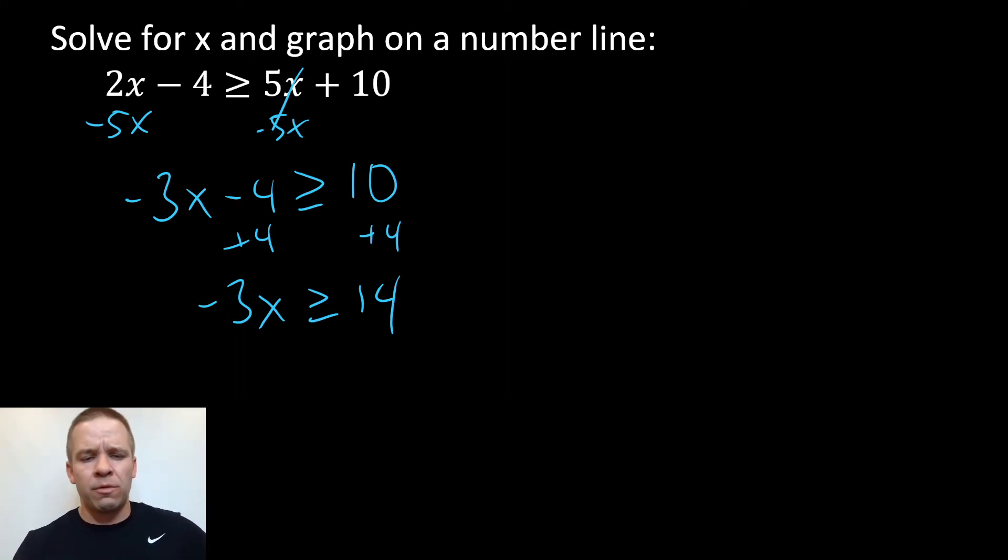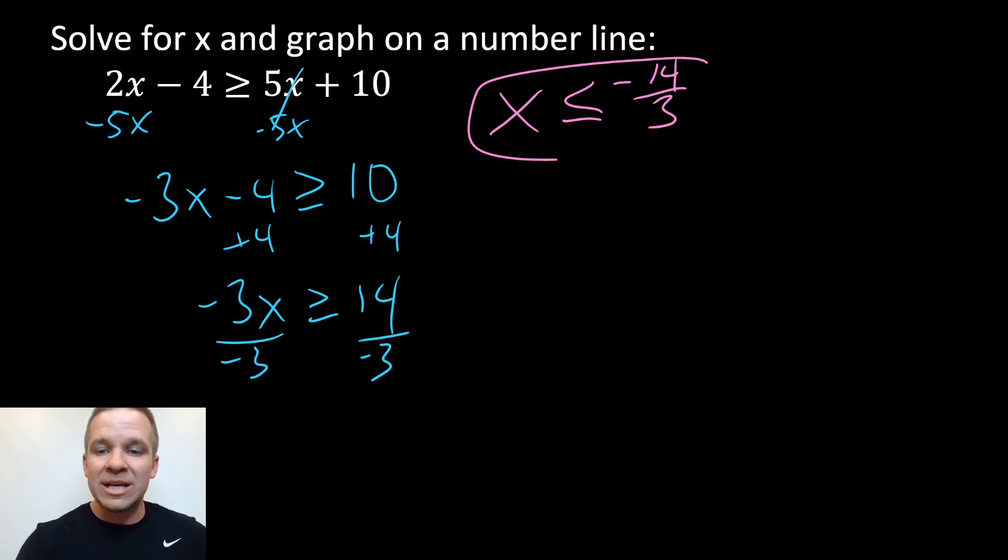Alright, I'm going to divide by negative 3 on both sides. Now, when we multiply or divide by a negative number, there's something special that occurs. We need to flip our inequality. So now our final answer here is going to be x is less than or equal to negative 14 over 3. That is our final answer. I'm going to flip that inequality.